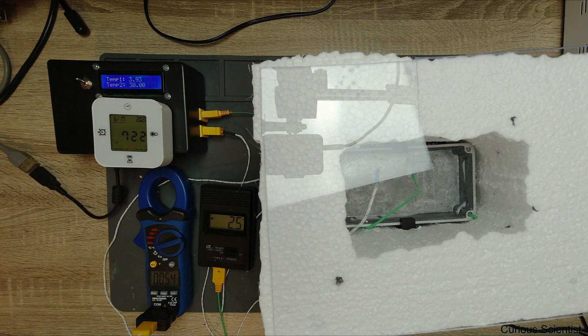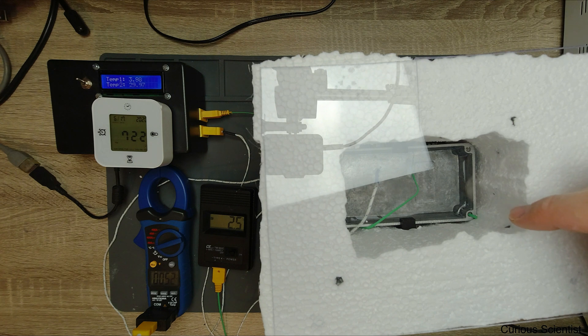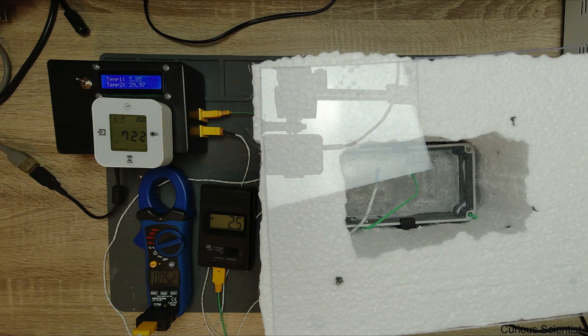So now we can sort of calibrate this thing and say that if temp 1, the corner there, reaches roughly 4 degrees, we can say that the water is somewhere around 0 degrees Celsius.